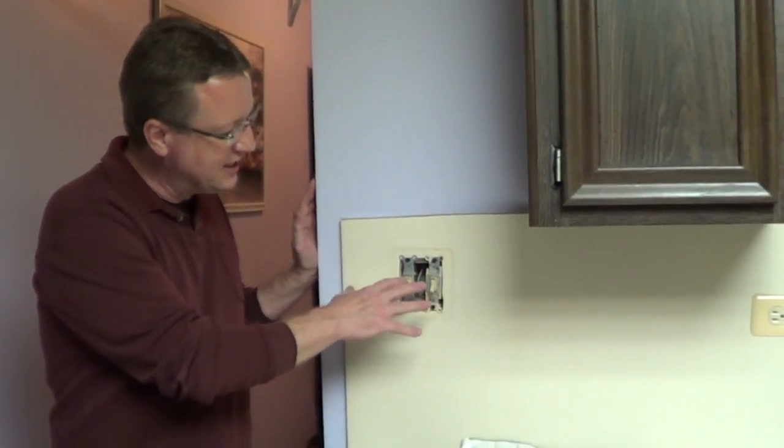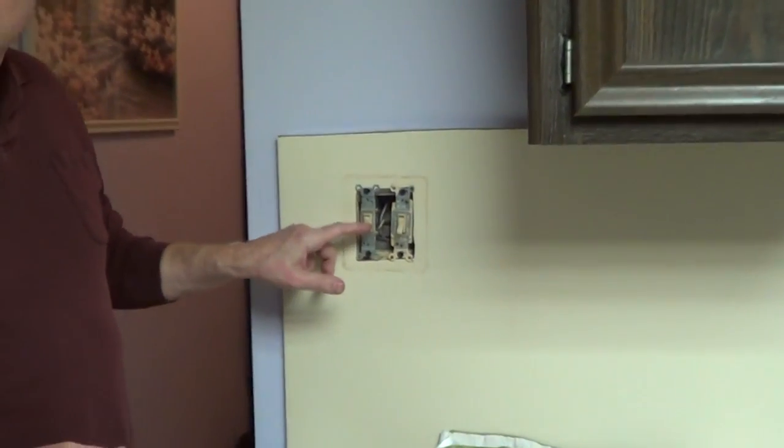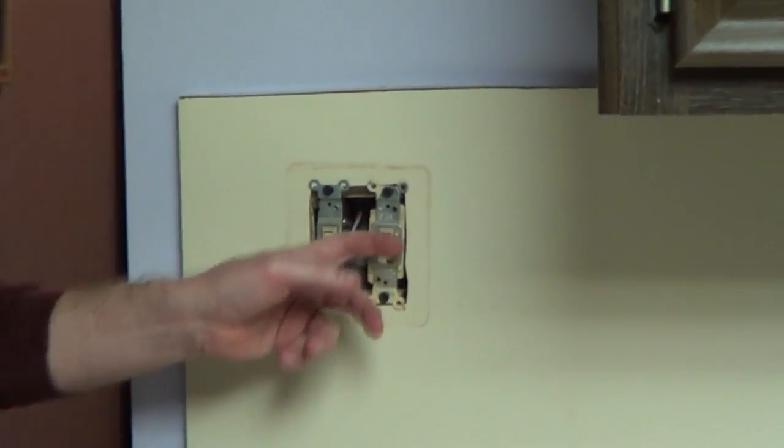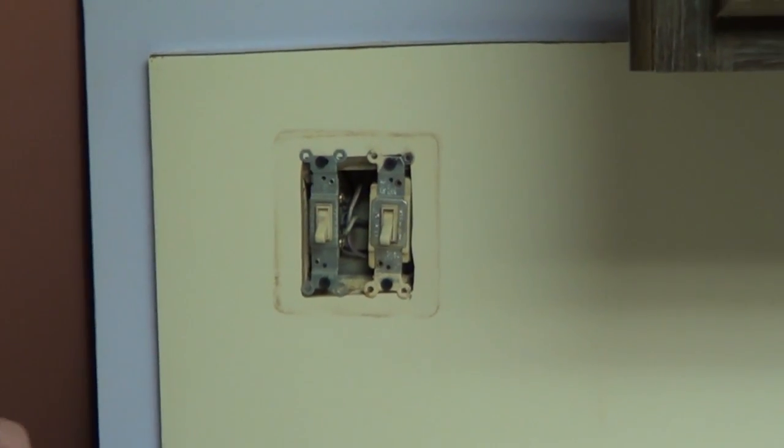I'm going to go through the steps on how to change a double switch. We have a single-pole switch and also a three-way switch. The first thing we want to make sure is that the electric's off.